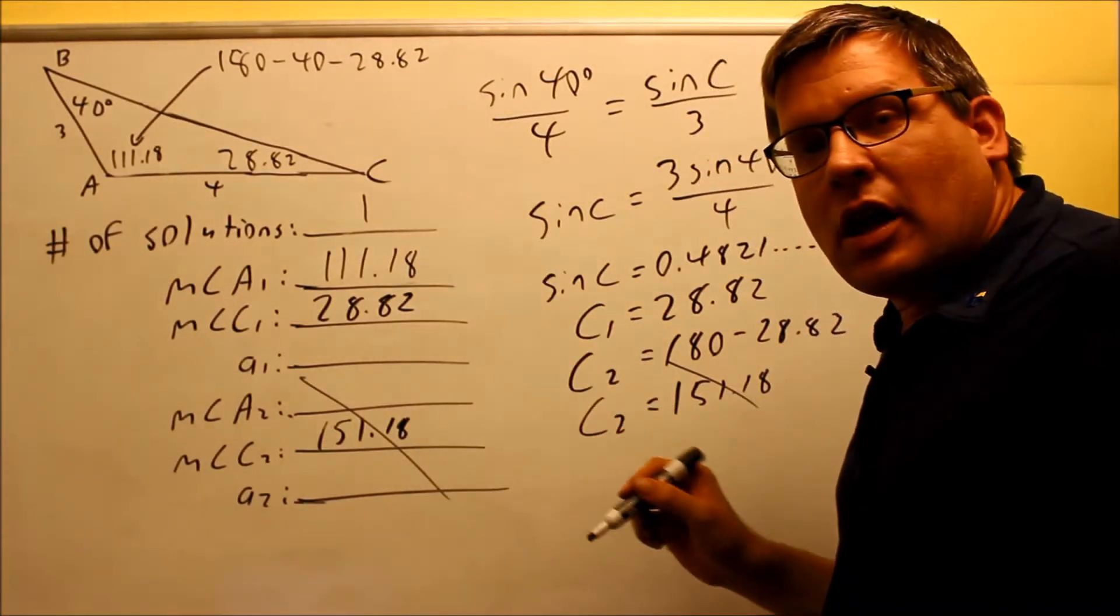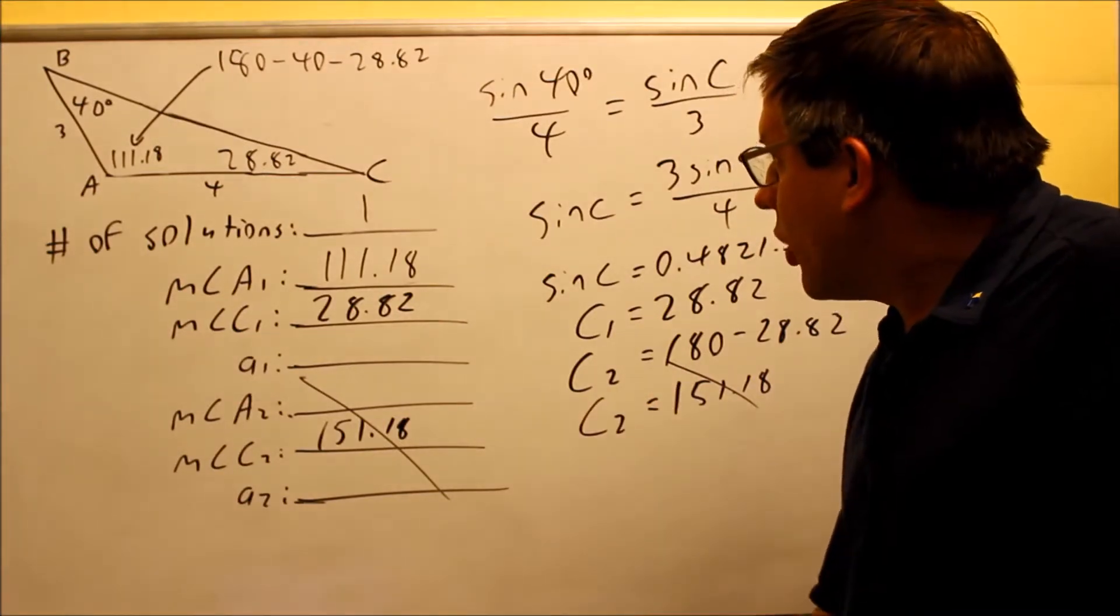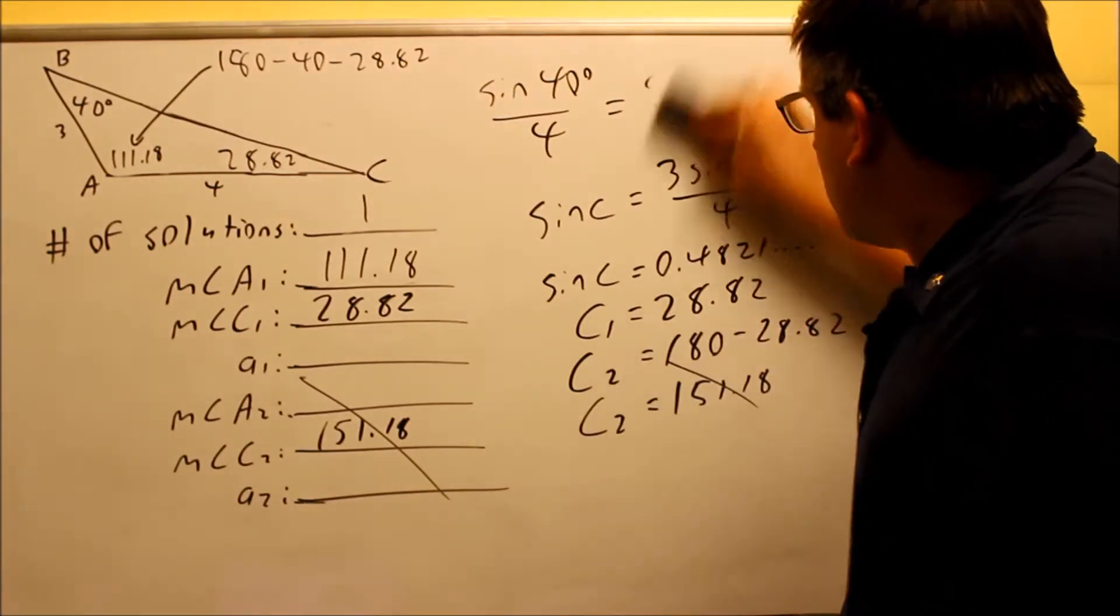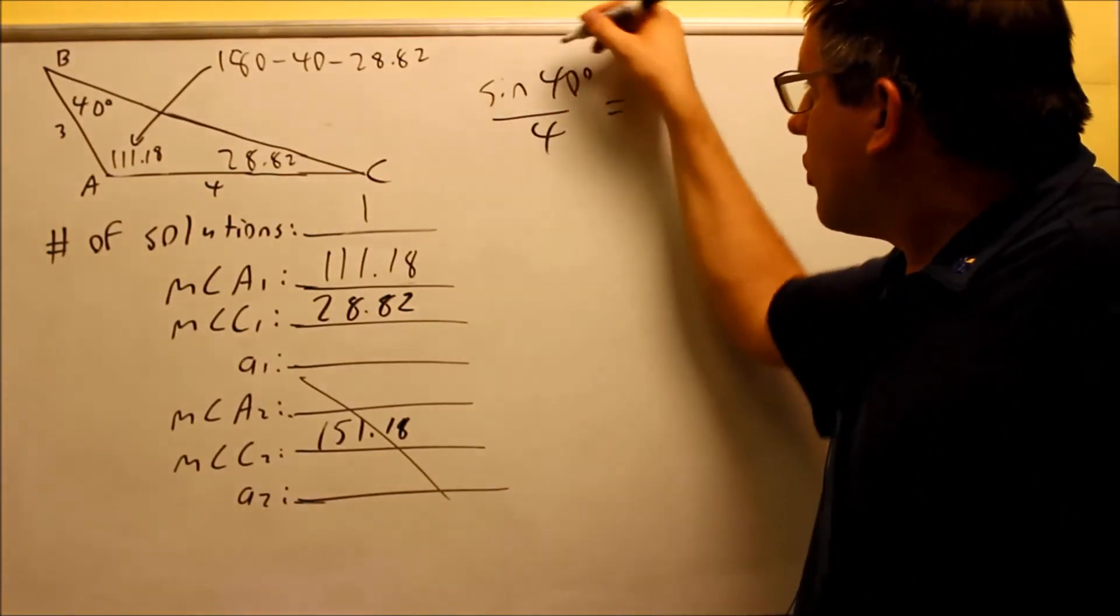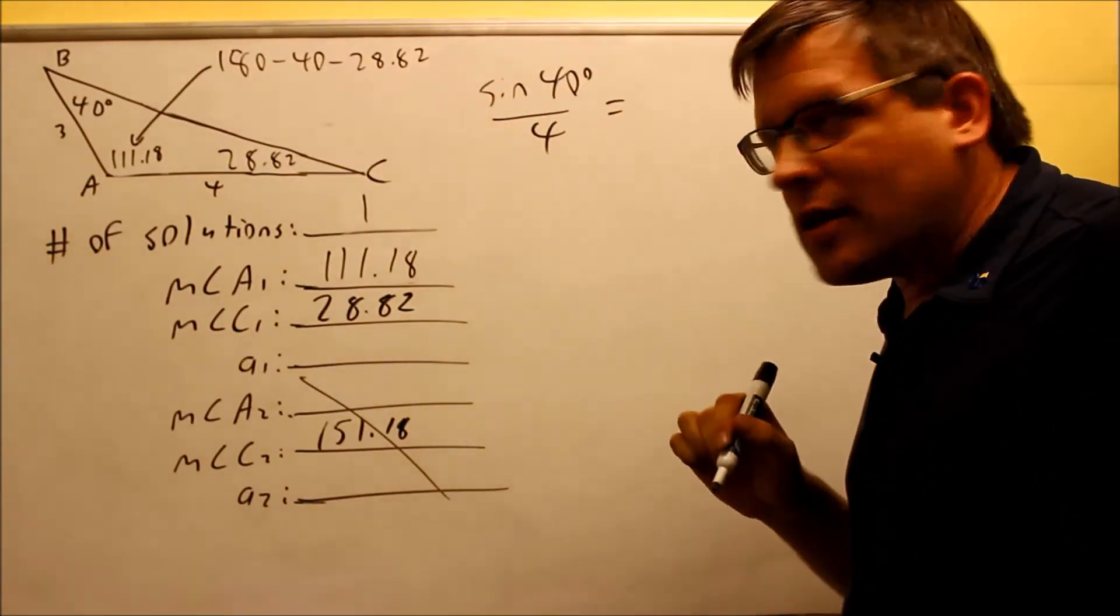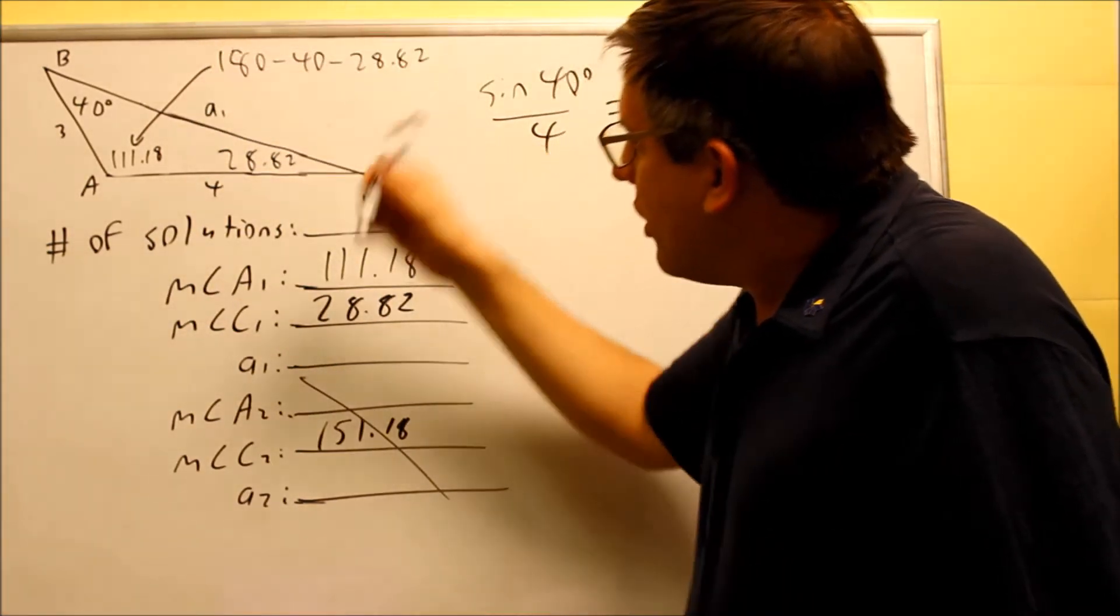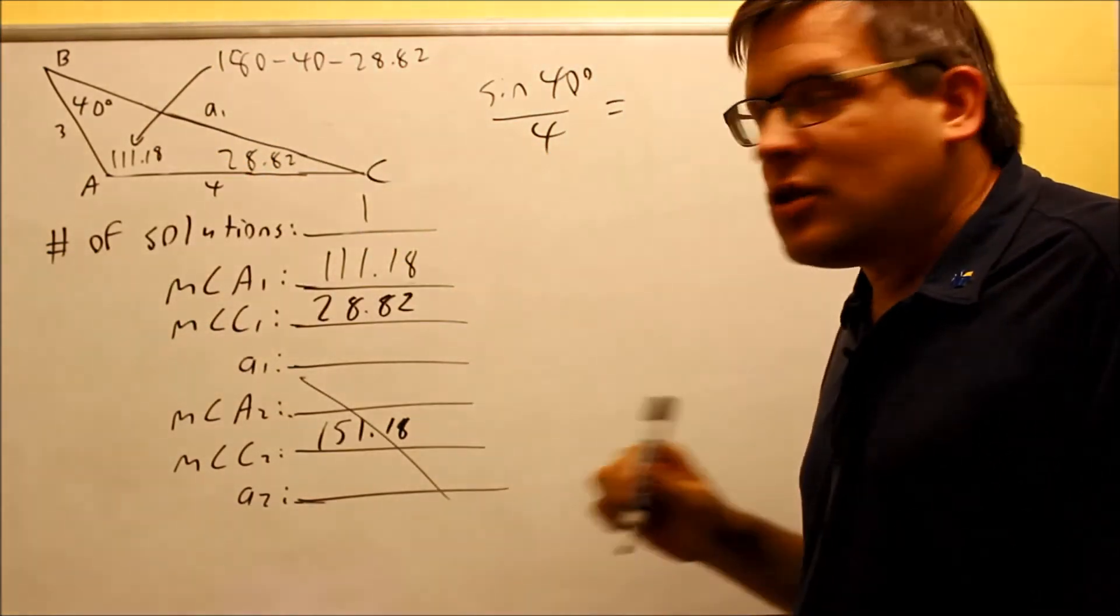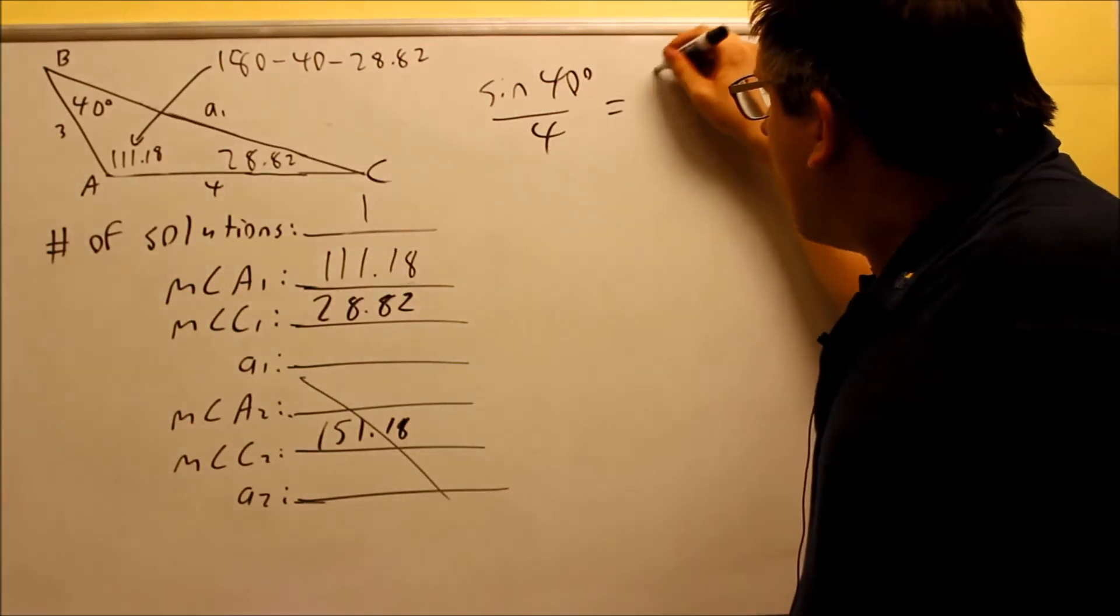Now that I have these complete, the last thing I want to do now is solve for side A, A1. So what we'll do is we'll do another one of these ratio setups here. We'll do sine 40 over 4 using the law of sines. If I want to solve for A, which is actually going to be this one right here, I've got to use 111.18. That's the angle that's opposite the side I'm trying to solve for.